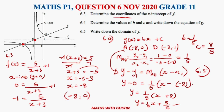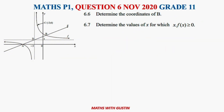Question 6.5: write down the domain of f. Looking at the graph, f takes as many x-values as possible on both sides, so the domain is all real numbers except where the vertical asymptote is. Therefore x ∈ ℝ, x ≠ -3.